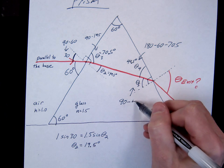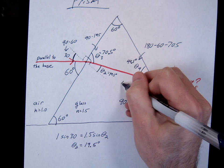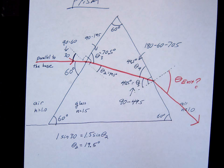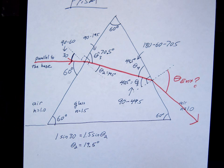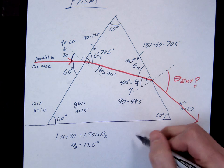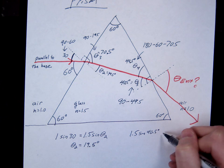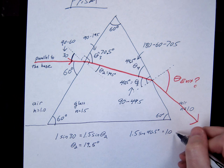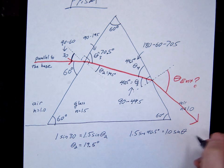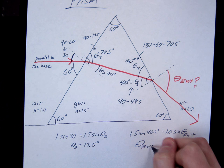90 minus 49.5. 40.5. We've now found the angle of incidence. So the last step we're going to do is go ahead and look for our exit angle here. Okay, so we'll use Snell's law. So we'll go 1.5 sine of 40.5 equals 1.0 sine of theta unknown. We'll call it theta exit.